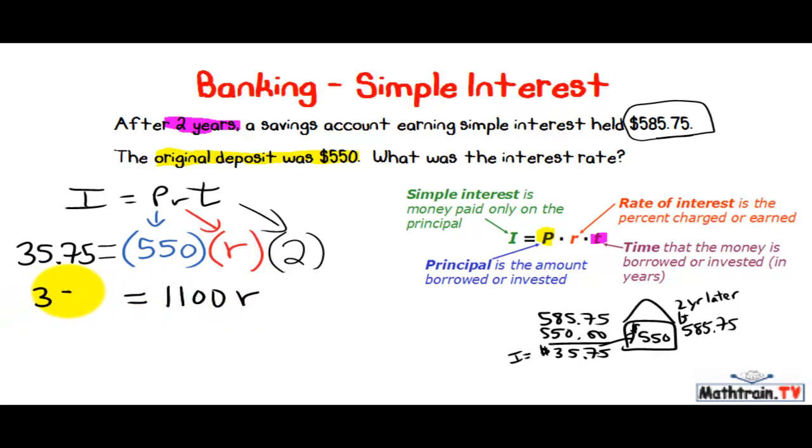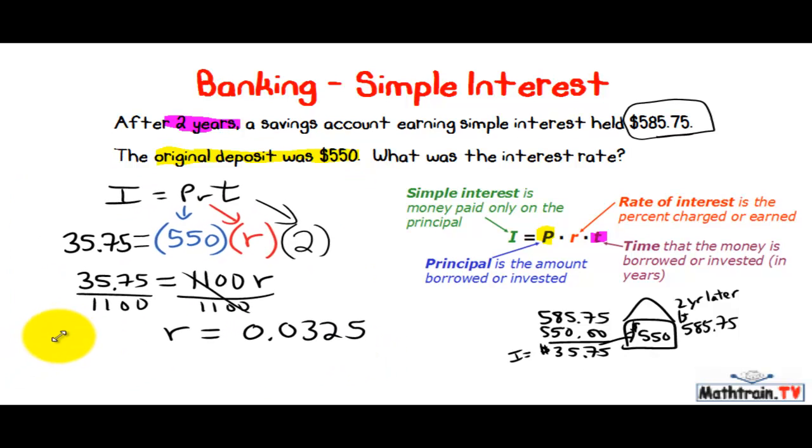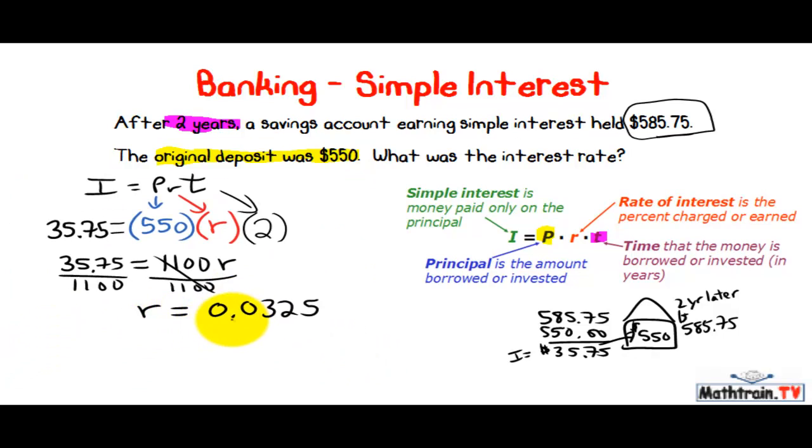And that equals $35.75. I want to divide both sides by $1100 to get R by itself. And you get R equals, now let's do $35.75 divided by $1100. And you get 0.0325. Which if we turn that into a percent, we just move this decimal point over two spaces.